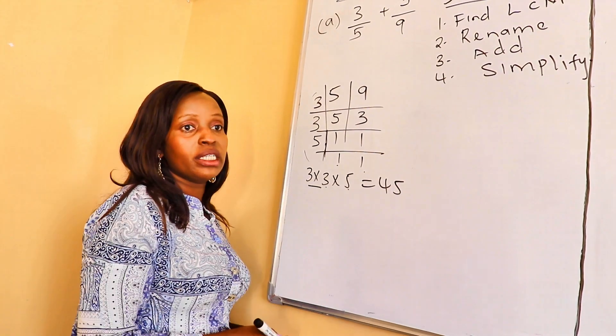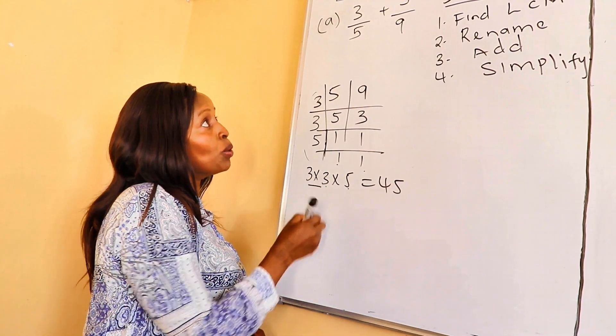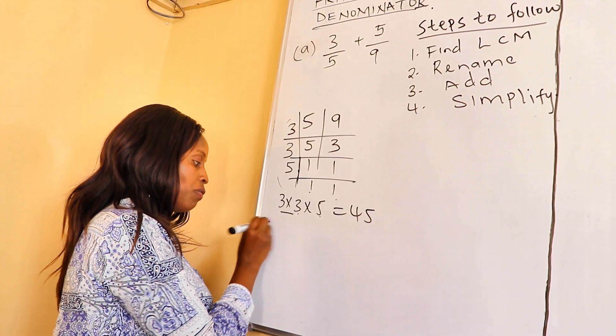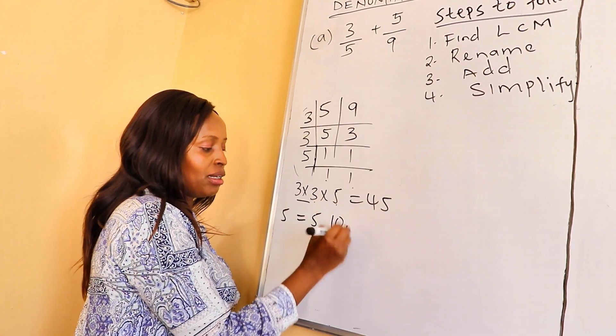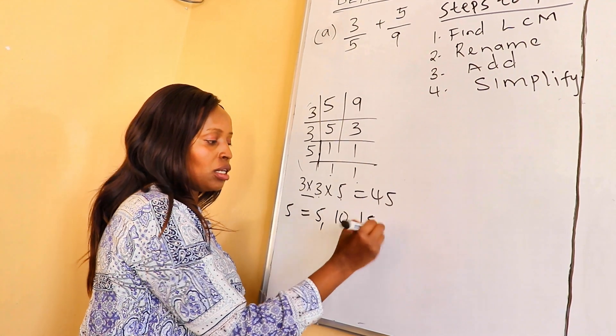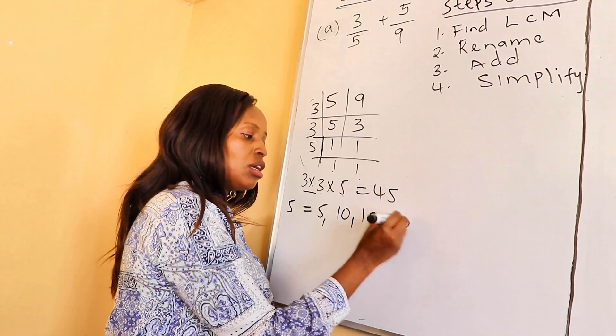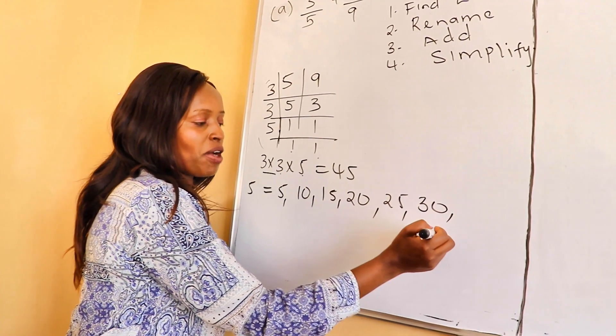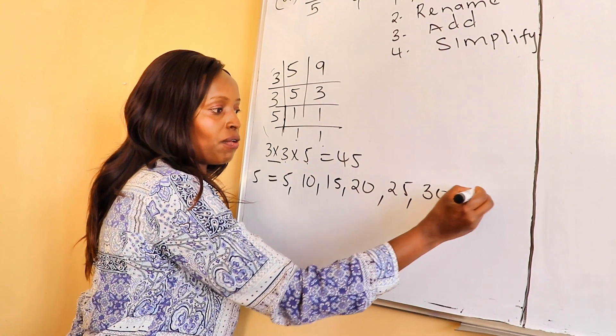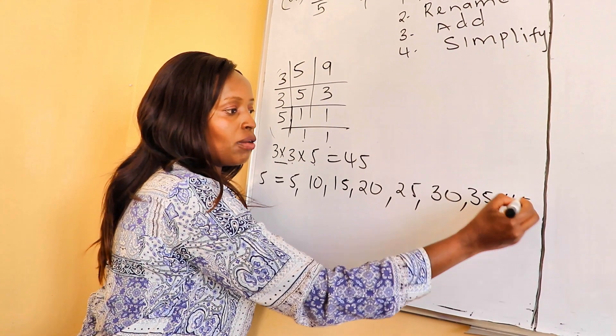Another way of doing it is by getting the multiples of these denominators. Multiples of 5 are: 5 times 1 is 5, 5 times 2 is 10, 5 times 3 is 15, 5 times 4 is 20, 5 times 5 is 25, 5 times 6 is 30, 5 times 7 is 35, 5 times 9 is 45.